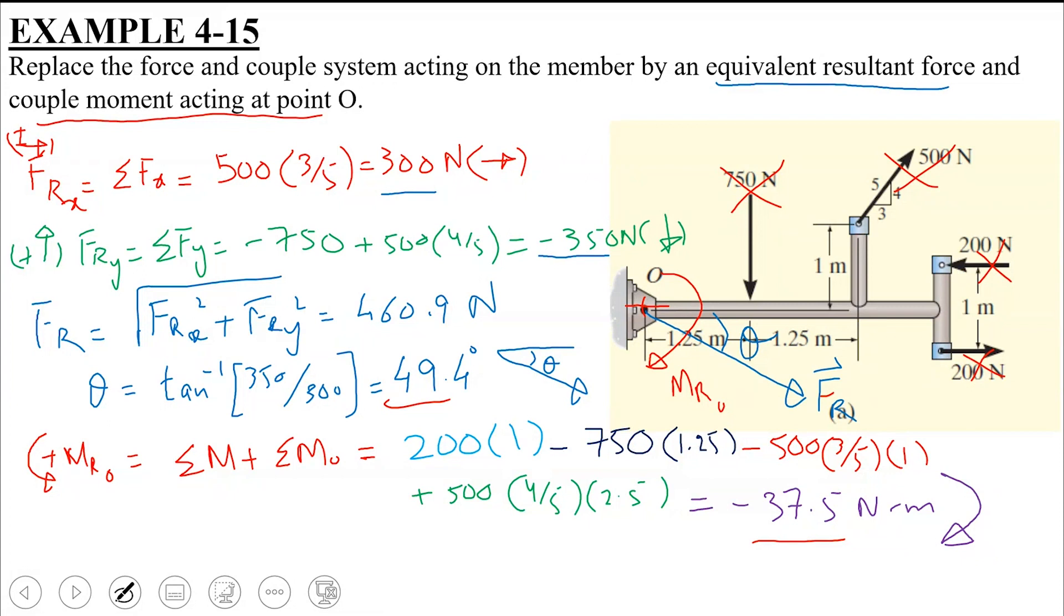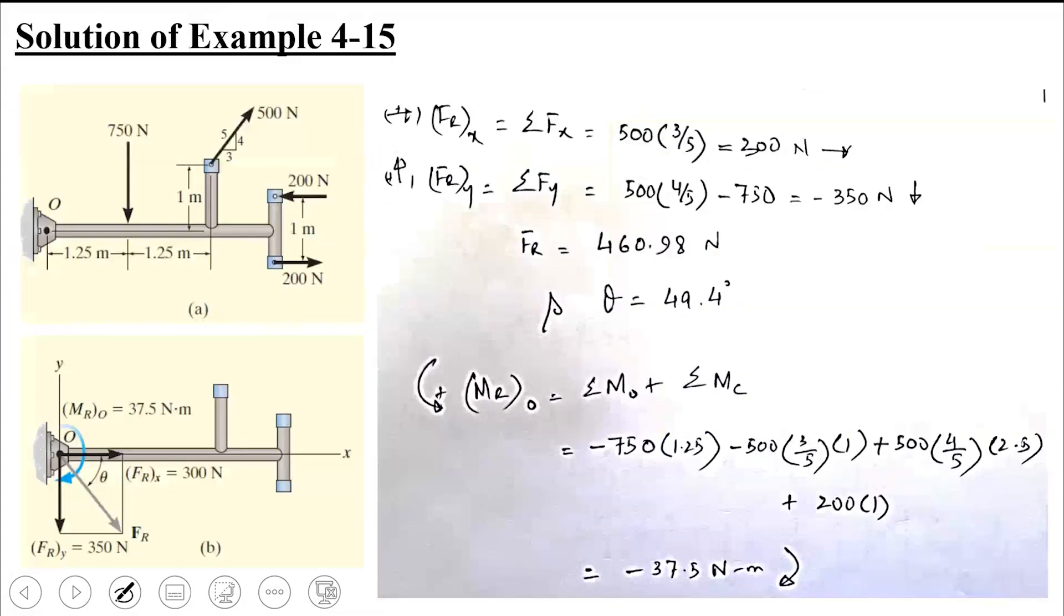So this system and given system, these two are equivalent. These two are the same. The given system was reduced and simplified. Both the systems are equivalent. Okay. So we have simplified our system to a single resultant force and a single resultant couple moment acting about point O. I hope that the example is clear to all of you.